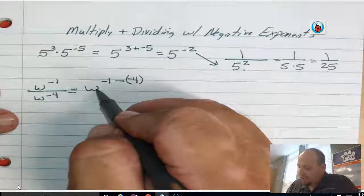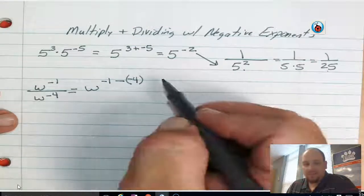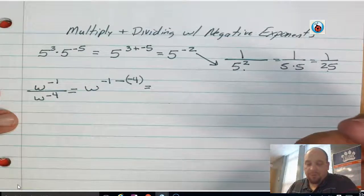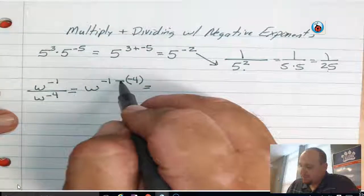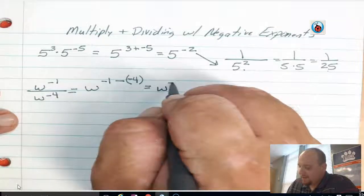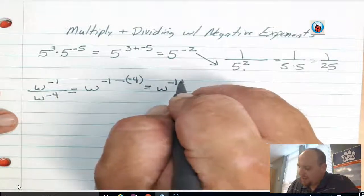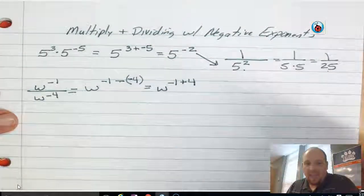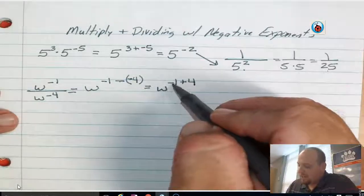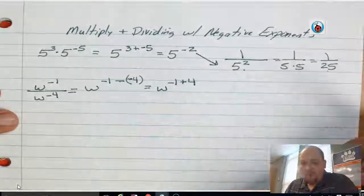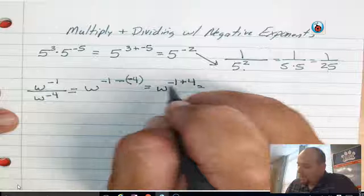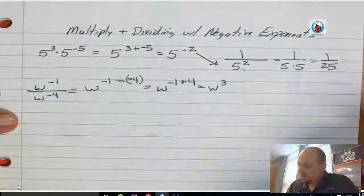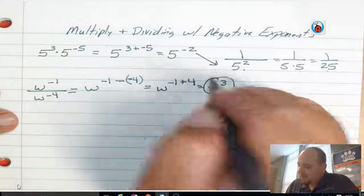So really, I have w to the negative 1 minus negative 4. Well, I'm going to use those integer rules that I learned last year. When I'm subtracting a negative, that's just the same as adding a positive. So I'm going to rewrite this as negative 1 plus 4. So I'm going to change that to w to the negative 1 plus 4. When I take negative 1 plus 4, I end up with an answer of 3. So there's my simplified answer.